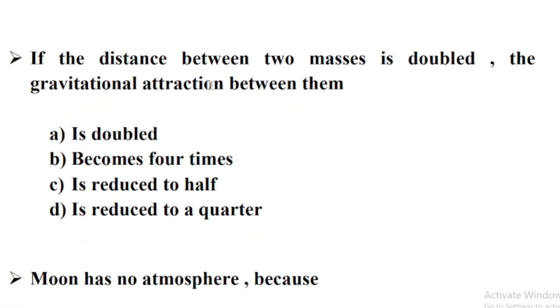If the distance between two masses is doubled, the gravitational attraction between them Option D is reduced to quarter.